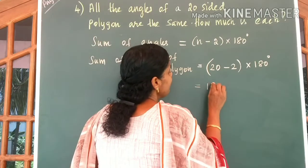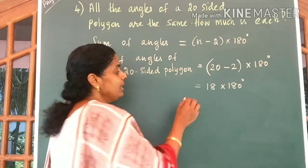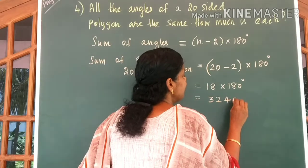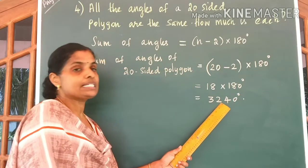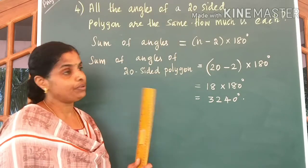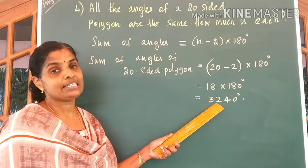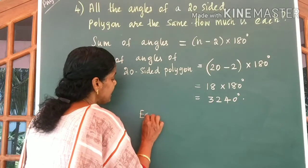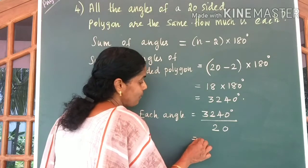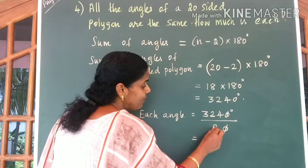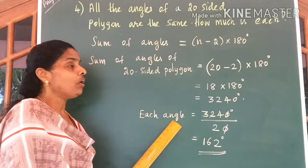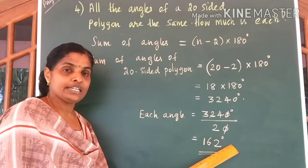So, we can write this is equal to 18 into 180 degrees. Now, multiply these two numbers: 18 times 180 equals 3240. So, we get 3240 degrees to be the sum of angles of a 20-sided polygon. Now, you are given all the angles are the same, so to find each angle, we divide 3240 by 20. Each angle equals 3240 degrees divided by 20, which is equal to 162 degrees.